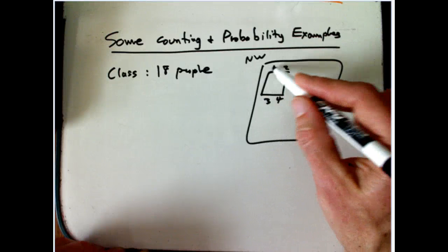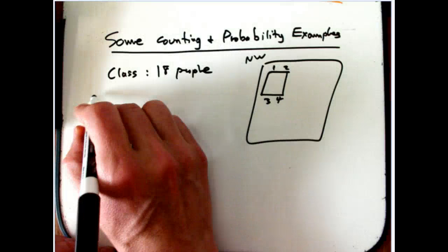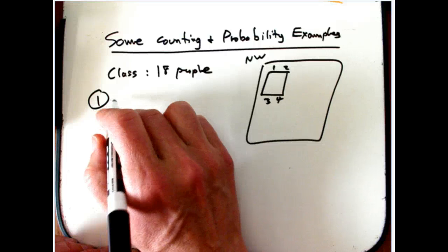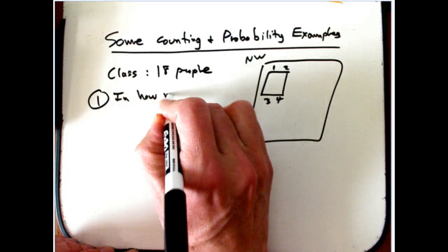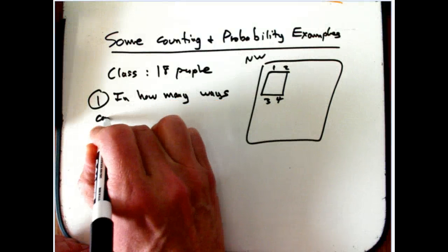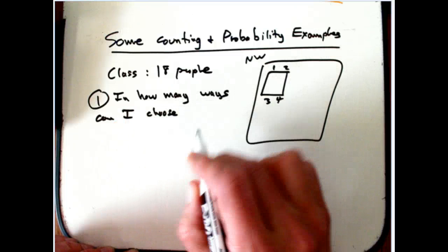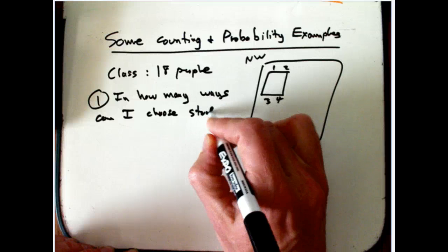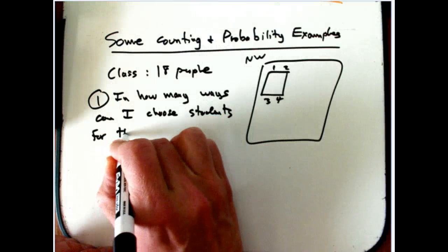And at the start we'll number the chairs 1, 2, 3, 4. And what I'd like to know, first question, is in how many ways can I choose students for these seats at this table?